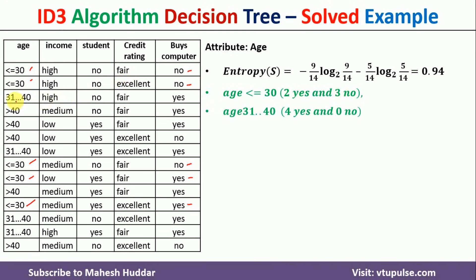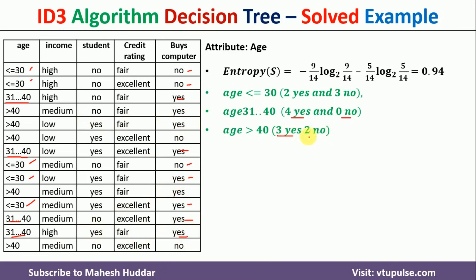For age greater than 40, there are 5 examples — 3 yes and 2 no.